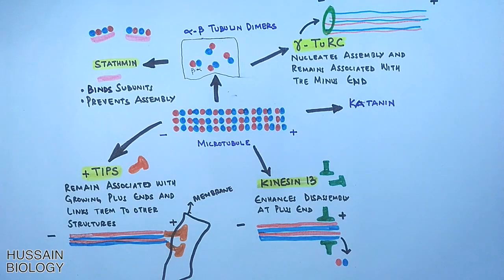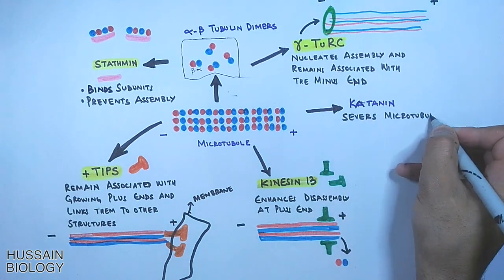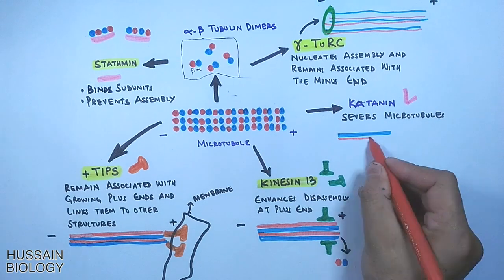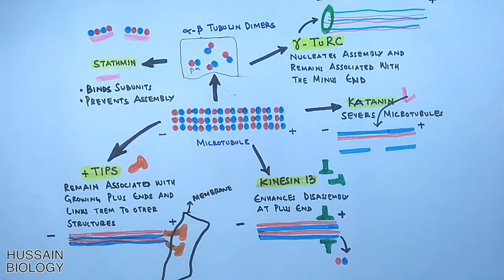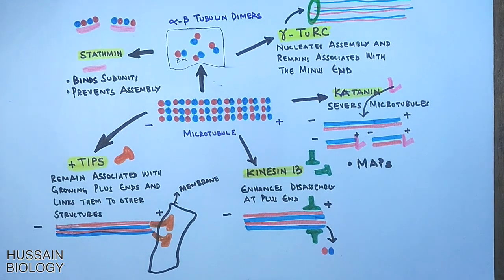Then we have katanin, a microtubule-associated protein. This katanin protein severs the microtubules into multiple parts and itself remains associated with the plus end, as shown in the diagram.